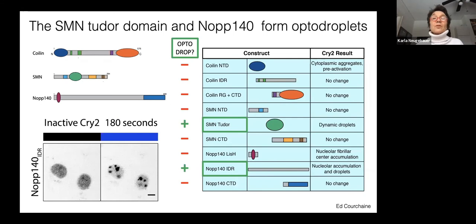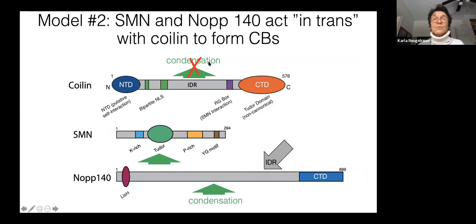To summarize the results of his screen, indeed the NOP140 intrinsically disordered region also does this biomolecular condensation, but none of the Coilan domains were capable of doing this, including the intrinsically disordered regions. This caused us to revise our model completely. We don't believe that the intrinsically disordered region promotes condensation. Instead, we know that condensation can be promoted by the Tudor domain and by this very long intrinsically disordered protein NOP140.